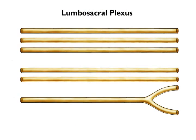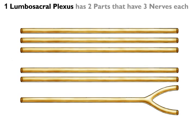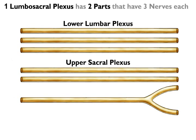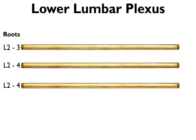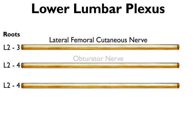We'll also use the same 1-2-3 method so that its functions are easy to remember. One lumbosacral plexus is composed of two parts: the lower lumbar plexus and the upper sacral plexus. Each of these parts has three nerves. The lower lumbar plexus is formed from the roots at spinal levels L2, L3, and L4. The three nerves of the lower lumbar plexus are the lateral femoral cutaneous nerve, the obturator nerve, and the femoral nerve.